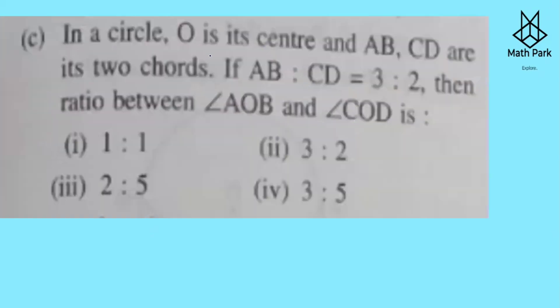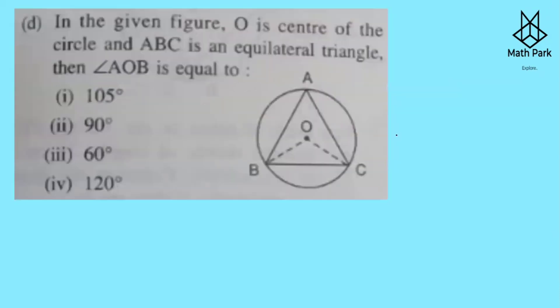Question 3: O is the center and AB and CD are two chords. If AB to CD is in the ratio 3 to 2, then the central angles subtended by those chords are also in the ratio 3 to 2.